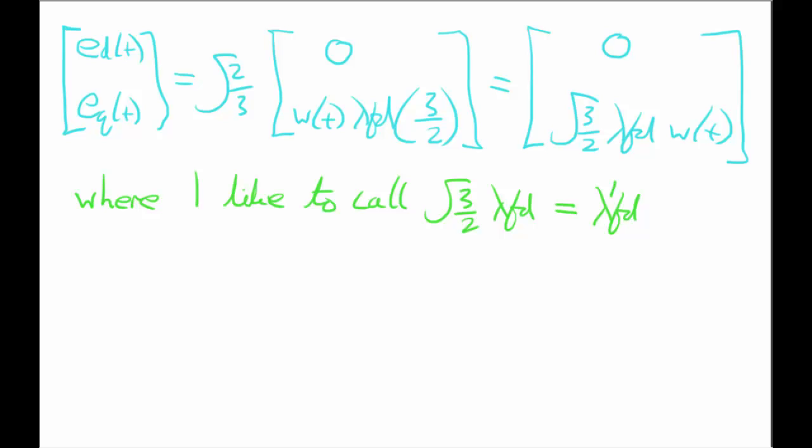You get that ed of t is equal to zero. And you get that eq of t is equal to this, which simplifies to square root three over two by the flux linkage by the electrical speed or electrical frequency omega of t. Where I like to call, in my paper I called the square root of three over two by the flux linkage another flux linkage. So that's that. Thanks for watching and hopefully it made sense. If it didn't, just leave a few comments below. Thanks.